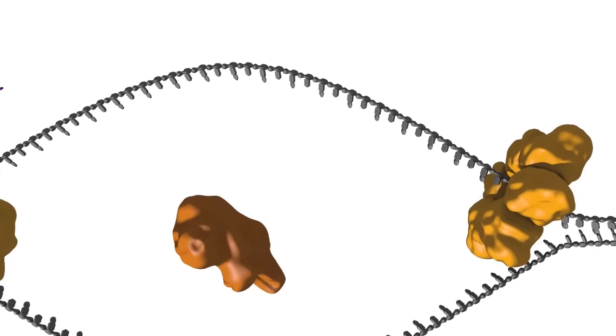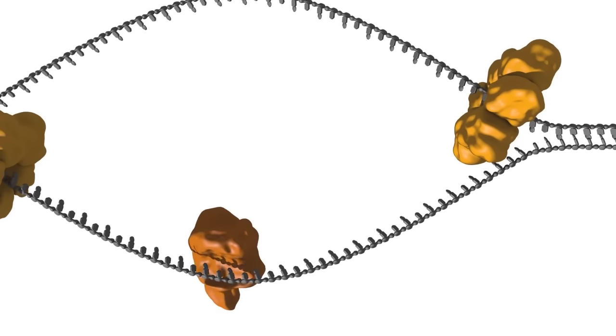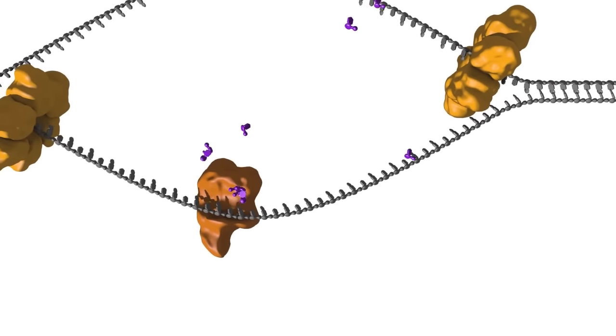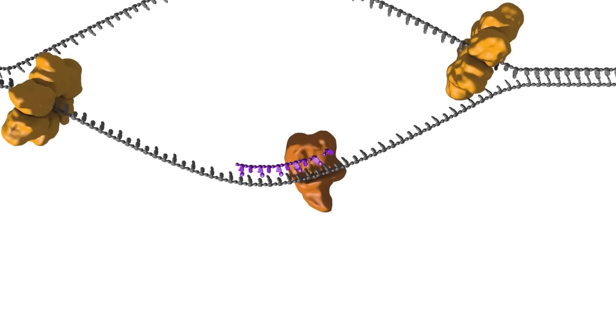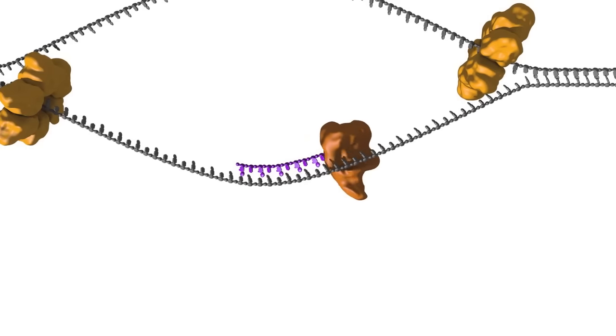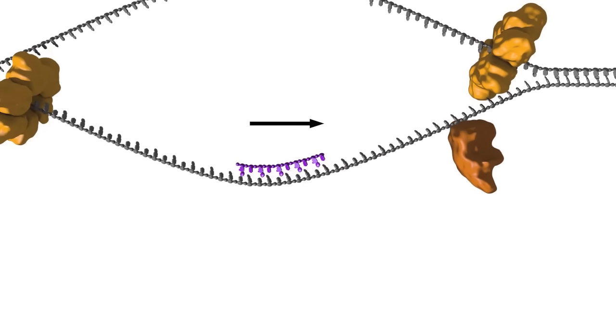Primers are made by an enzyme called primase. Once access to the single strands of the DNA has been obtained, the primase is loaded onto the DNA. The primase synthesizes a small stretch of RNA by copying the sequence of nucleotides on the template strand. A DNA polymerase will later elongate this small RNA stretch.